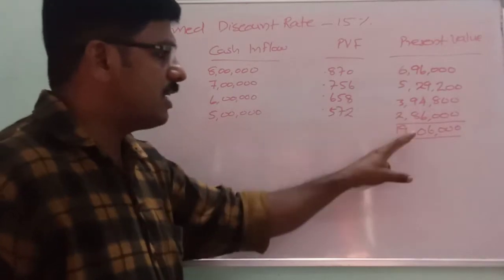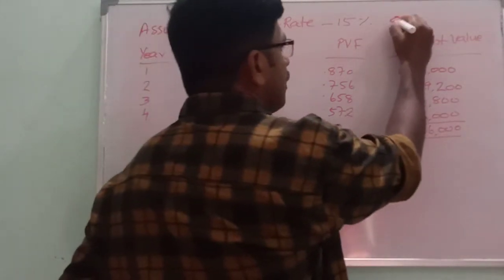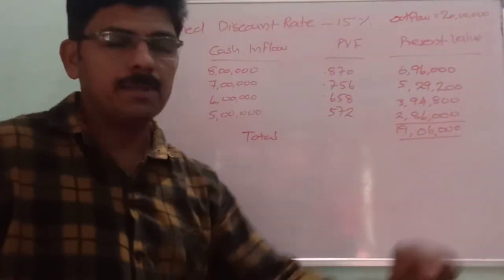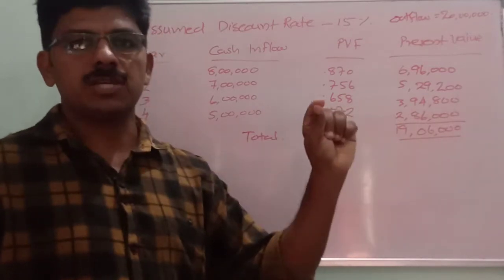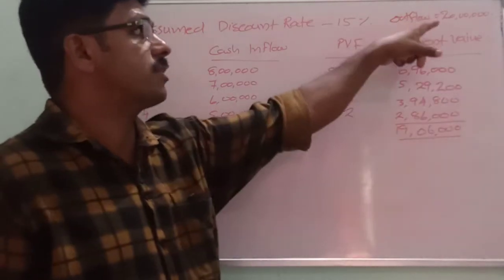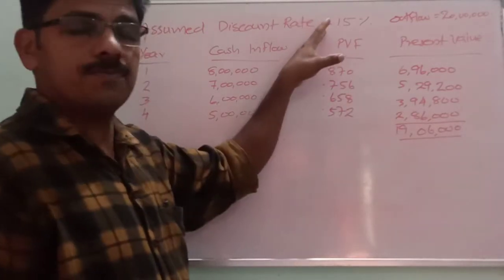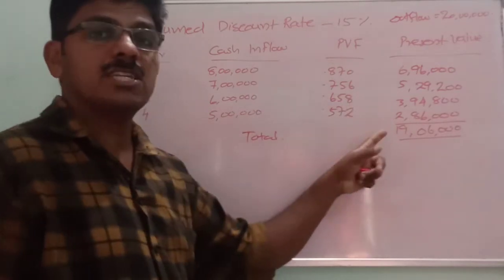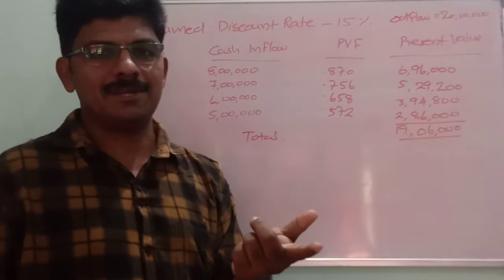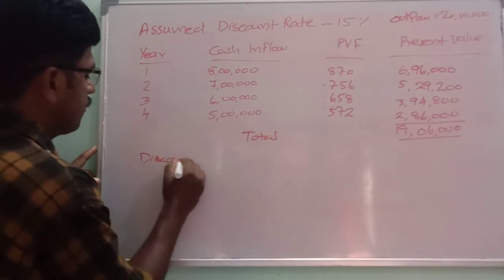The total present value at 15% is 19,6,000. The outflow given is 20,00,000. Since the obtained total present value of cash inflows is lower than the cash outflow, a lower rate is to be applied next.